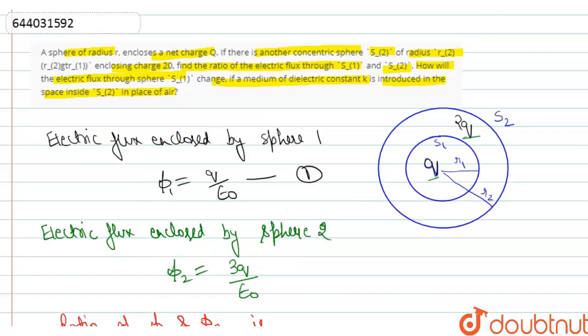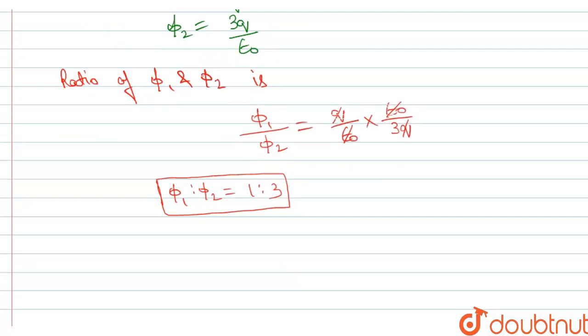If a medium of dielectric constant K is added inside S2 in place of air, that is in this area, if the dielectric constant K is added, then what will be the effect on S1 flux? So there will be no change in the electric flux of sphere 1.